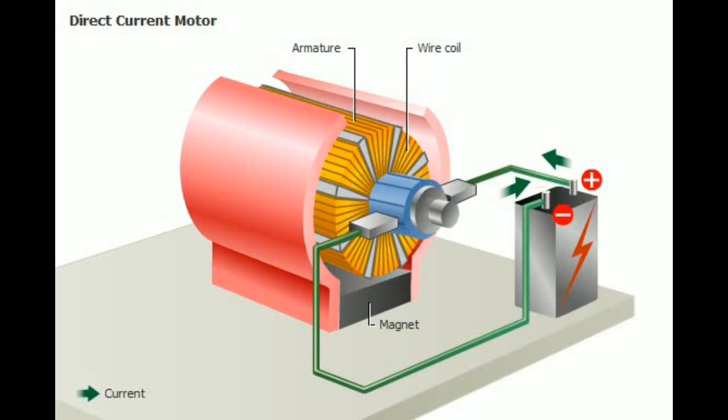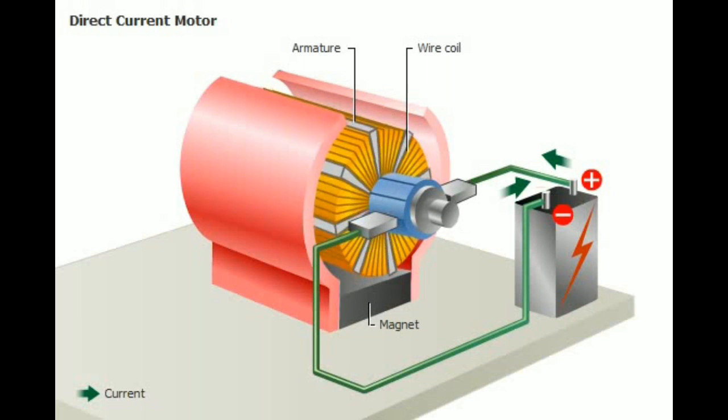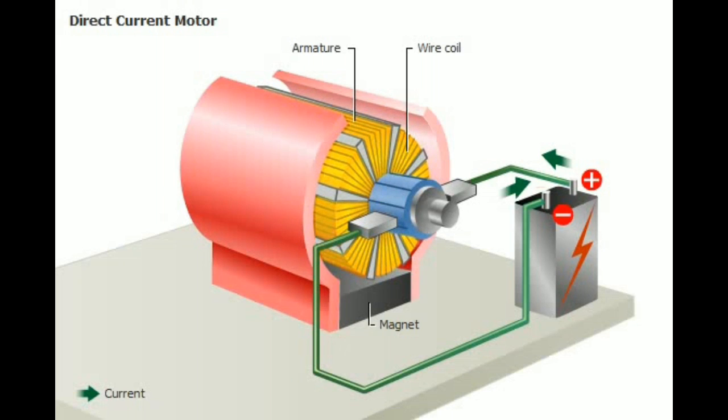A DC motor consists of an armature that rotates within a magnetic field. The armature has a coil of wire wrapped around an iron core.